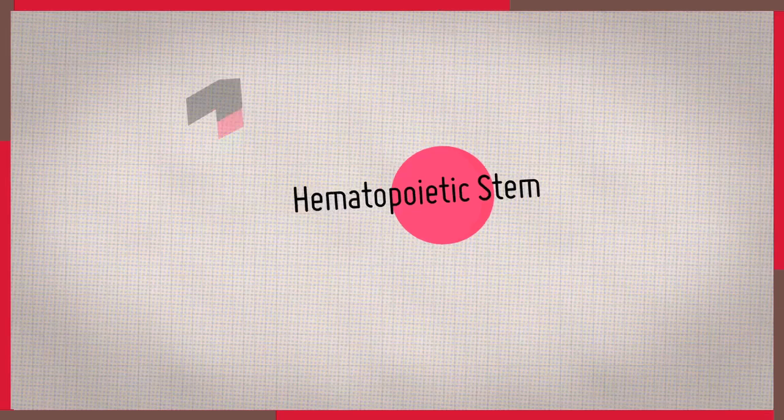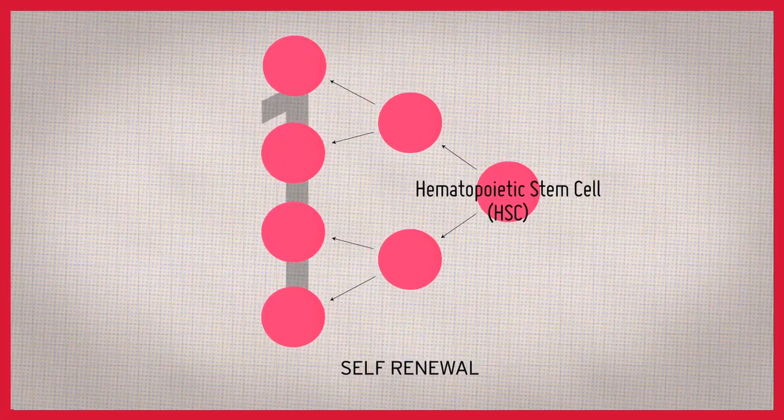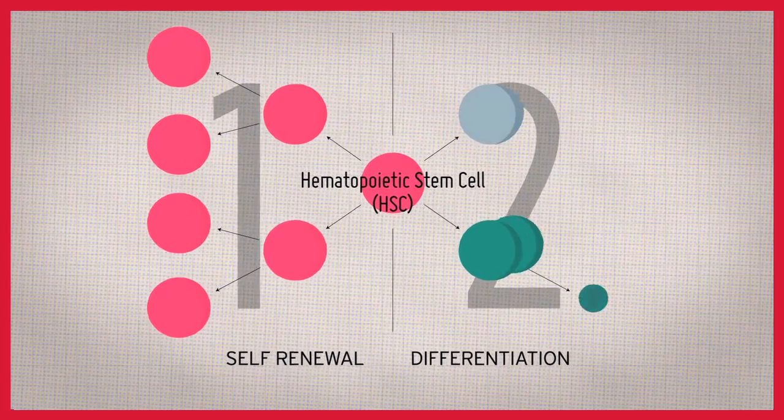Hematopoietic stem cells are unique because they continue to make more of themselves while also producing cells destined to become specialized blood cells.